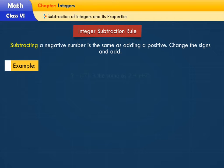For example, 2 minus minus 7 is the same as 2 plus plus 7. 2 plus 7 is equal to 9.